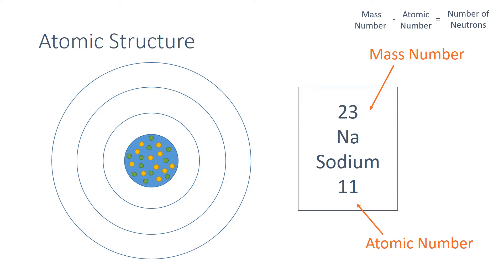Remember our first rule for the atom: the number of electrons is equal to the number of protons, so therefore we know that sodium has 11 electrons.